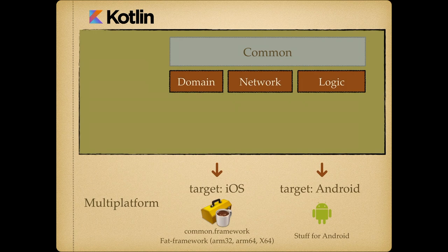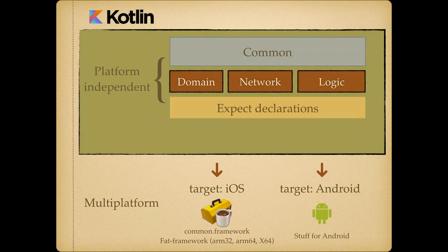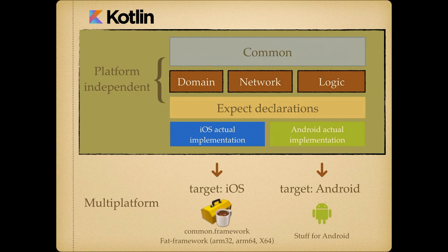Sometimes you do want to write some platform-specific code or reach out to things from the platform. For that, you can make expect declarations — I'll show you later what it looks like. You write your iOS-specific implementation and your Android actual implementation. You can kind of see it as a protocol that has two implementations, one for iOS and one for Android. And the nice thing is that within that Kotlin code, you can use the Cocoa Touch and Cocoa frameworks.